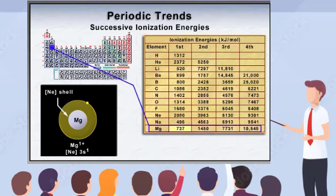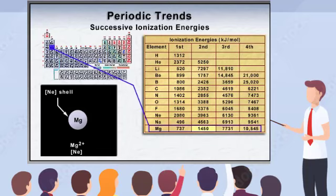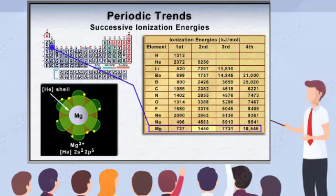The second ionization energy of 1450 kilojoules per mole represents removing the remaining 3s electron, yielding the magnesium 2 plus ion. Notice that the next electron removed would be from the closed-neon shell. As you learned earlier, the noble gases aren't likely to gain or lose electrons due to their stable electron configurations. The jump to the next ionization energy represents pulling an electron from the magnesium 2 plus ion's closed shell. This requires a lot of energy, as you see by the jump from 1450 to 7731 kilojoules per mole.